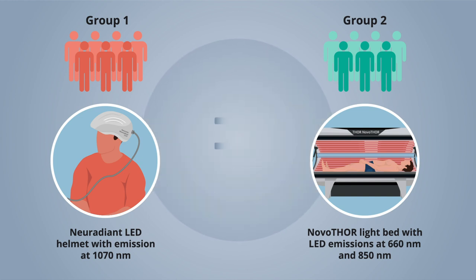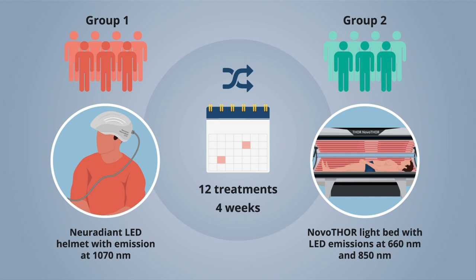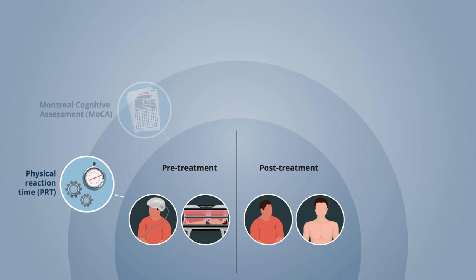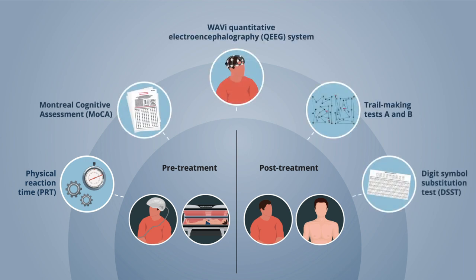The subjects were randomly allocated to receive either PBM treatment and received a total of 12 treatments over a four-week period. They were evaluated pre- and post-treatment using a battery of neurophysiological tests and the WAVI quantitative electroencephalography (QEEG) system.